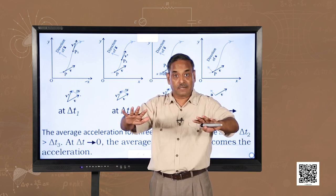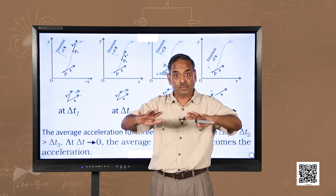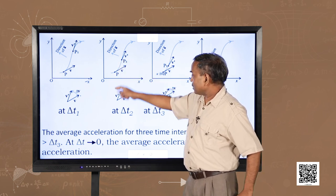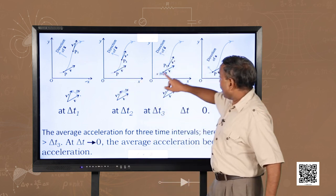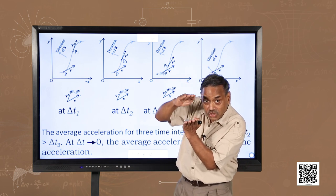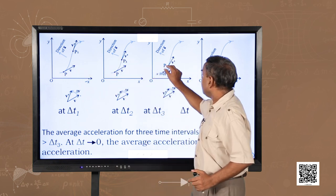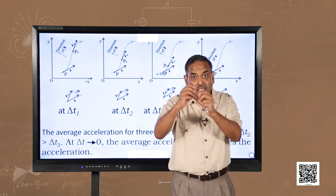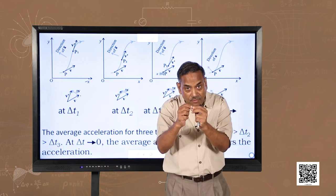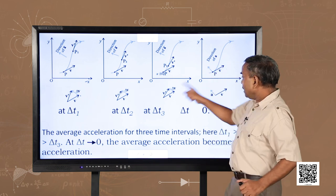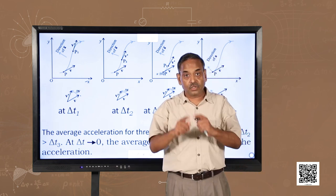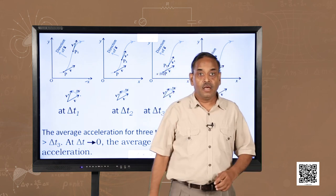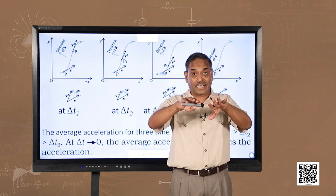So the acceleration will also be in a different direction. At point P2, the direction of acceleration is found similarly. Now we reduce the separation — from P2 to P3, larger distance, shorter distance, even shorter — as delta t tends to zero, the difference between P and P-dash becomes very close to zero. As we bring the points together, we can understand from these diagrams that at point P, the acceleration is in the perpendicular direction.